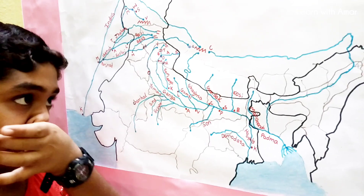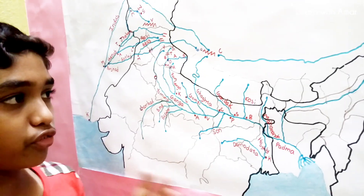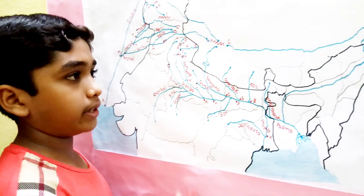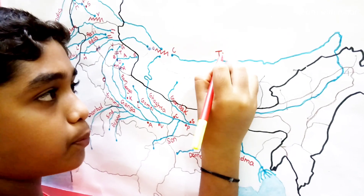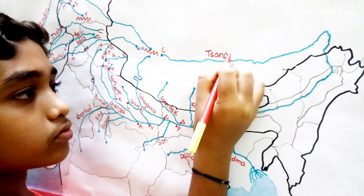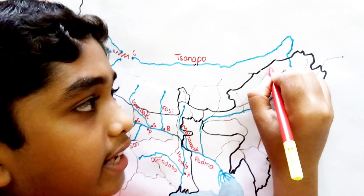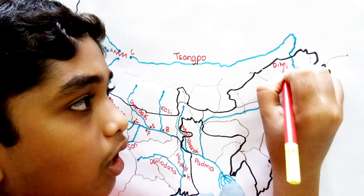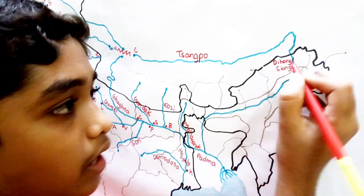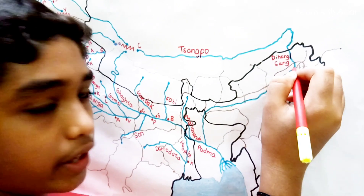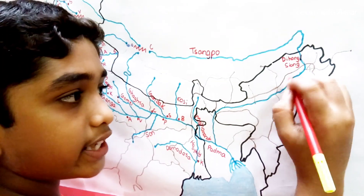The Brahmaputra has different names in different regions. In Tibet, it is known as Sangpo. When it enters India, it is called Dihang or Siyang. Then when it joins with Lohit at Dibru, it is called Brahmaputra.